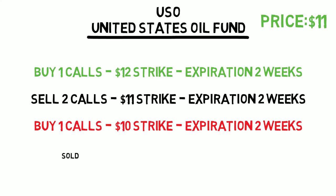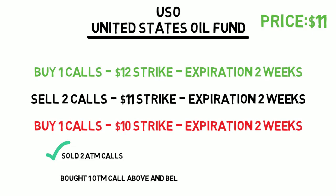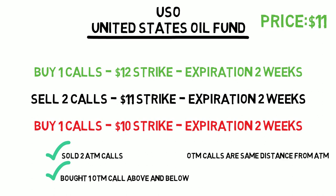If we go through the butterfly checklist: we sold two at-the-money calls — check. We bought one call $1 under the strike price — check. We also bought one call $1 above the strike price — check. The higher and lower strike prices are the same distance from the at-the-money option strike — check. And finally, all options are expiring on the same date — check.